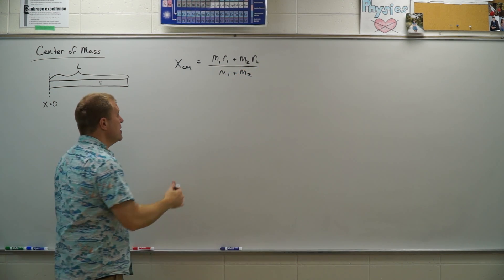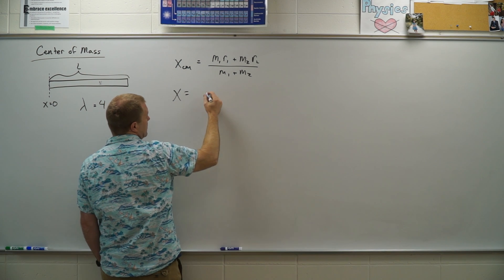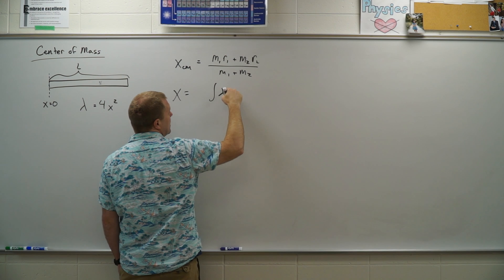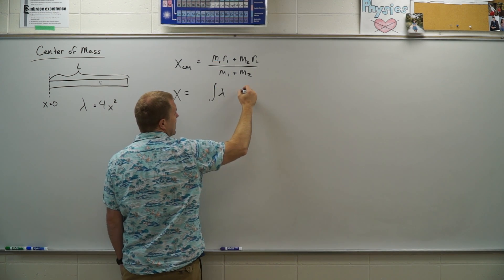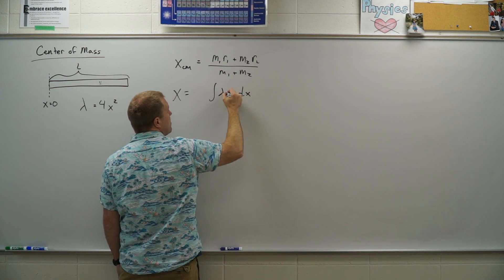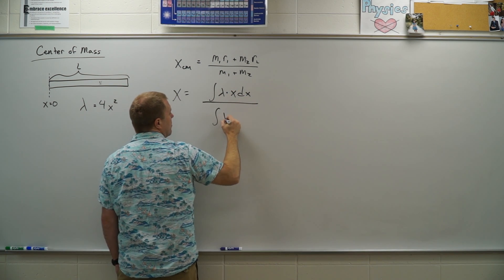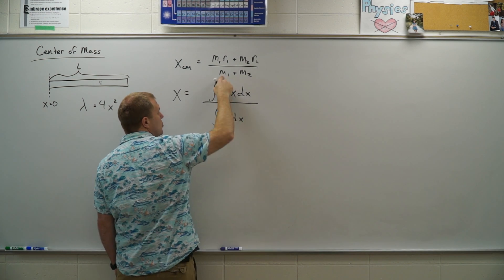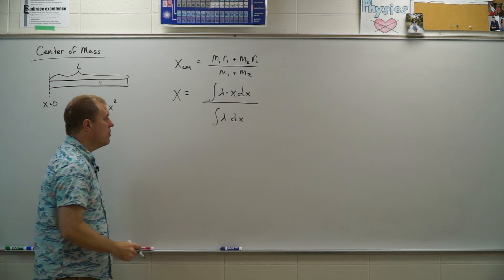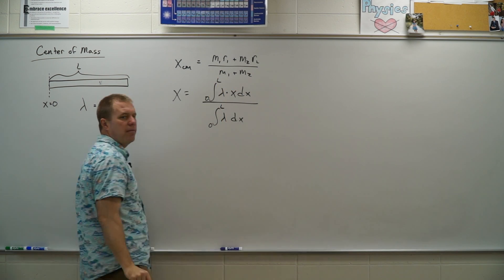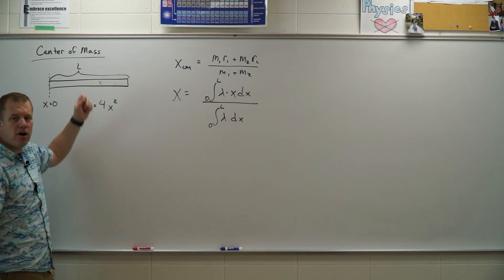So what we need to do here is we need to integrate. So we are going to have the integral of lambda, which is going to be dx is our mass, but then we need to multiply it by the location x divided by the integral of lambda dx, which is just the mass. And we are going to be going from 0 to L in this case, because that is the length of our rod.